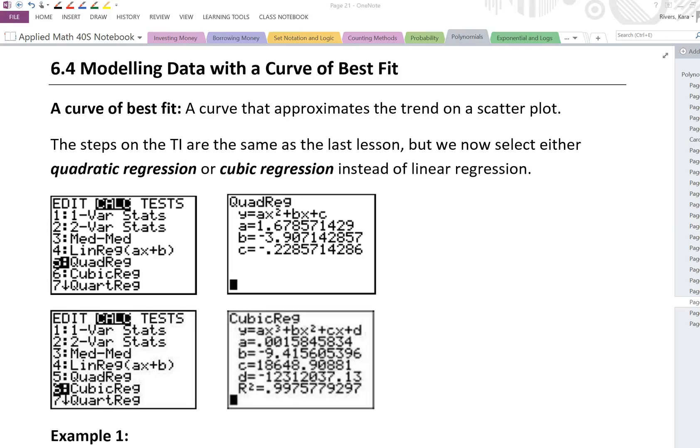In this lesson we're going to be modeling data with a curve of best fit. All the steps that we took to model data with a line of best fit still hold true, but when you get to the menu where you're choosing what kind of regression you're doing, you're now choosing either a quadratic regression or a cubic regression. You can see there's lots of different regressions, so you really have to analyze your scatterplot, see what kind of trend we can see there, and what is going to be the best regression that will fit what we're doing. In this lesson we're looking at quadratic regression or cubic regression.